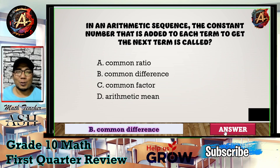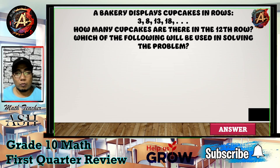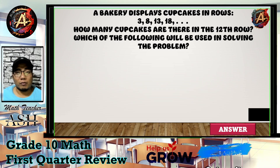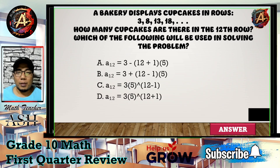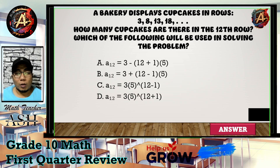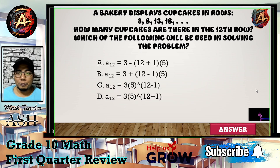Question number seven: A bakery displays cupcakes in rows: 3, 8, 13, 18, and so on. How many cupcakes are in the 12th row? Which formula will be used? A) a₁₂ = 3 - (12+1)×5, B) a₁₂ = 3 + (12-1)×5, C) a₁₂ = 3 × 5^(12-1), or D) a₁₂ = 3 × 5^(12+1)? I'll give you five seconds to think about your answer.